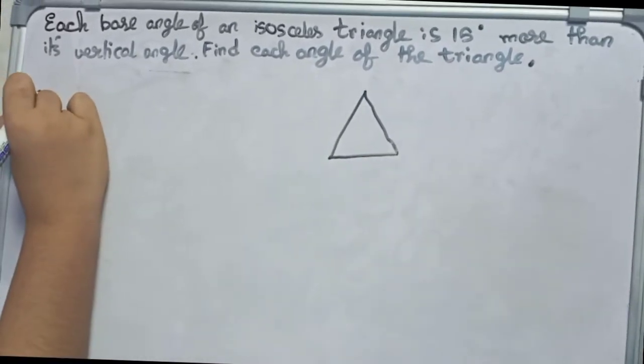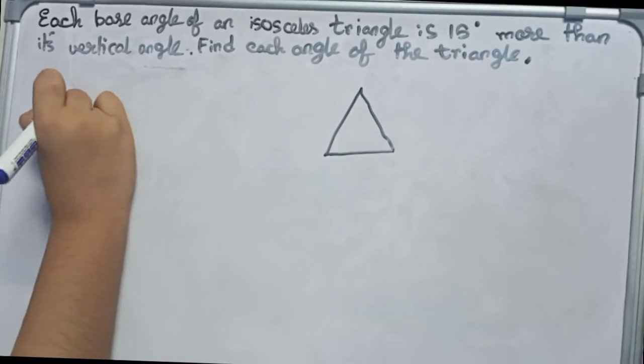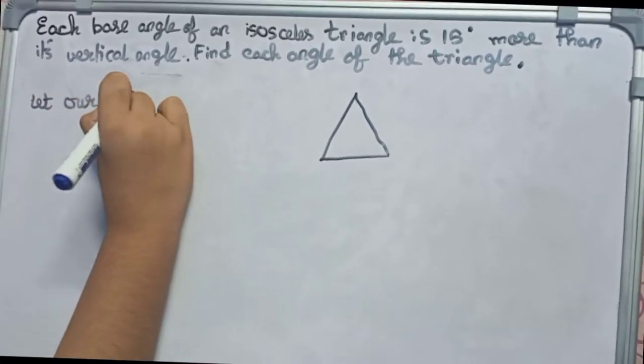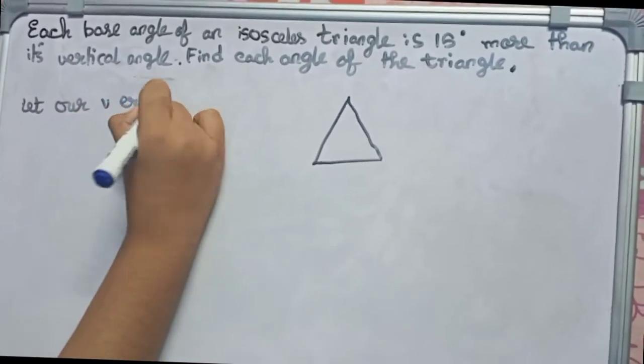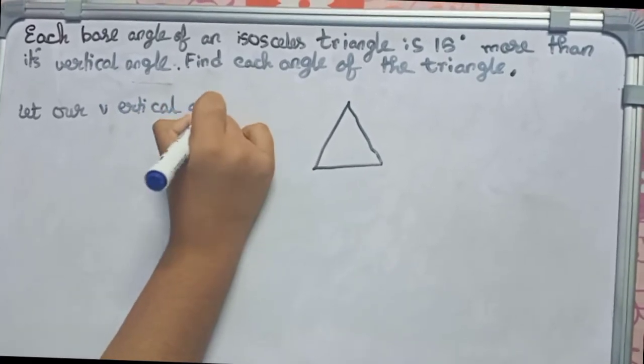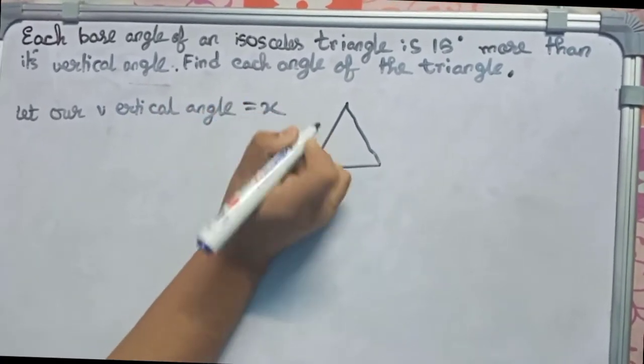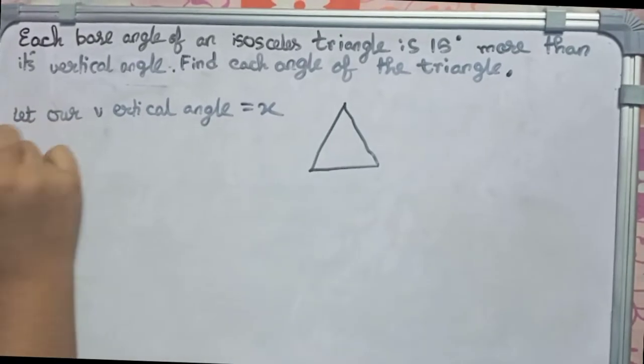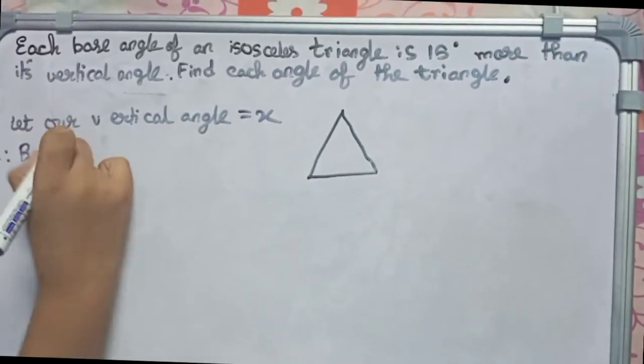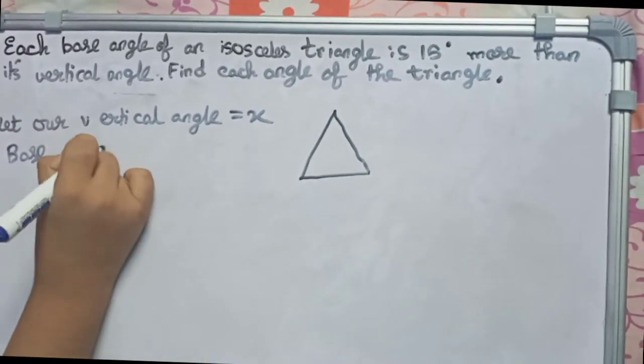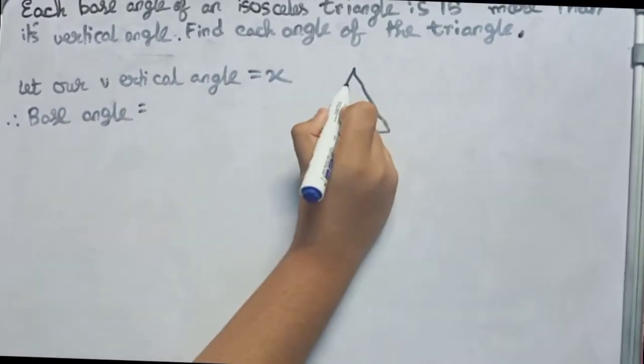Now we write: let our vertical angle equals to x. Now therefore base angle - this will be our vertical angle, we have taken it as x.